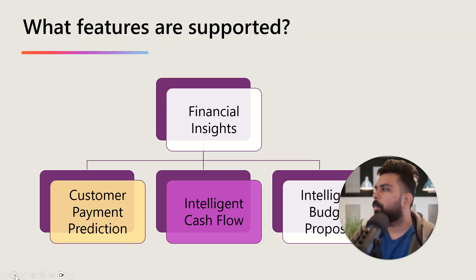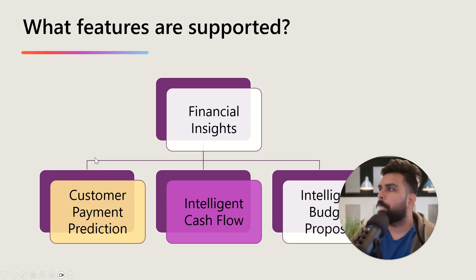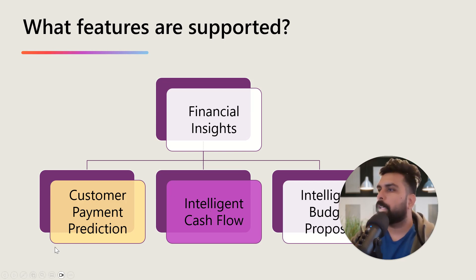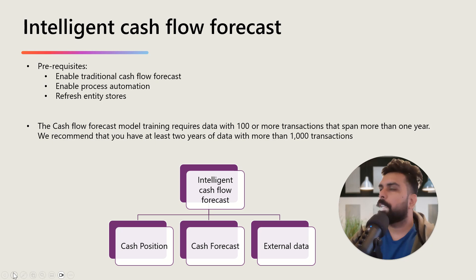Just to recap what we have been discussing in this series: we have been talking about the Financial Insights features. There are three major features in the system — customer payment prediction, intelligent cash flow forecast, and budget proposal. We have completed the payment prediction, completed one part of the intelligent cash flow, and now we are going to talk about the second part of the intelligent cash flow forecast.